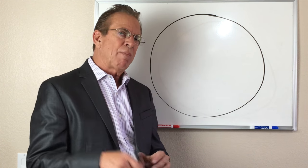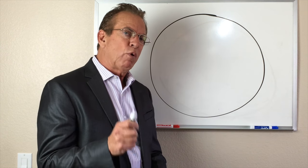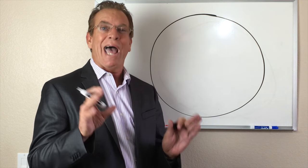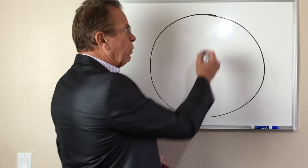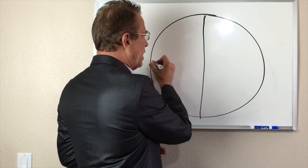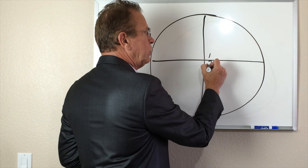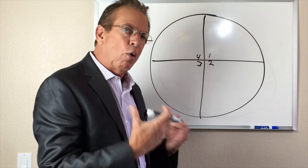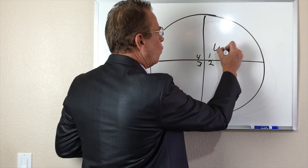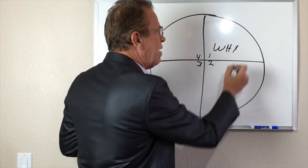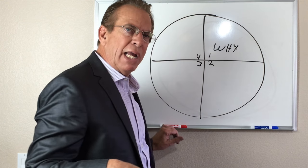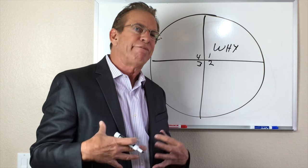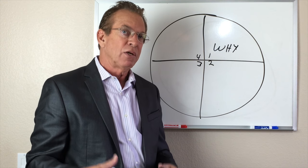Today we want to talk about the four learning styles, and more importantly, we're going to focus on the question that each of the four learning styles asks in a classroom. We're going to take this wheel — this circle — cut it into four, and label it one, two, three, and four. The question that type one learners ask is 'why.' They want to know: why am I here?